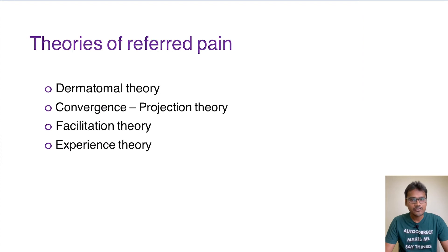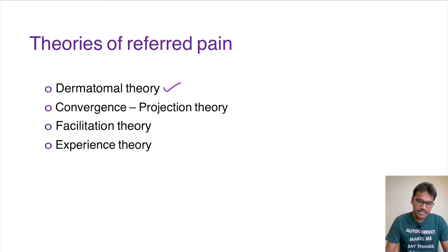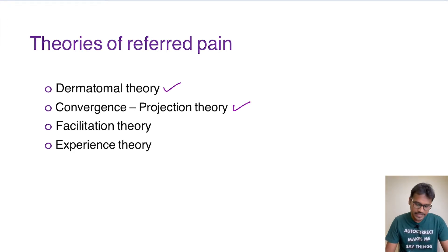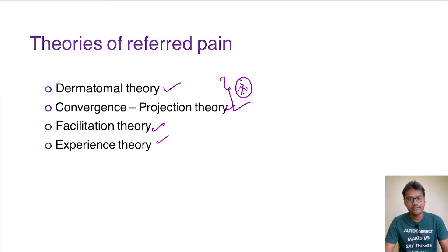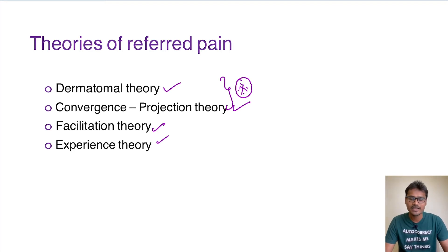Coming to the theories of referred pain, there are usually four theories given. They are: dermatomal theory, convergence projection theory, facilitation theory, and experience theory. Out of these, the first two are of very great significance because they are very widely accepted. The other two are gaining some significance these days.